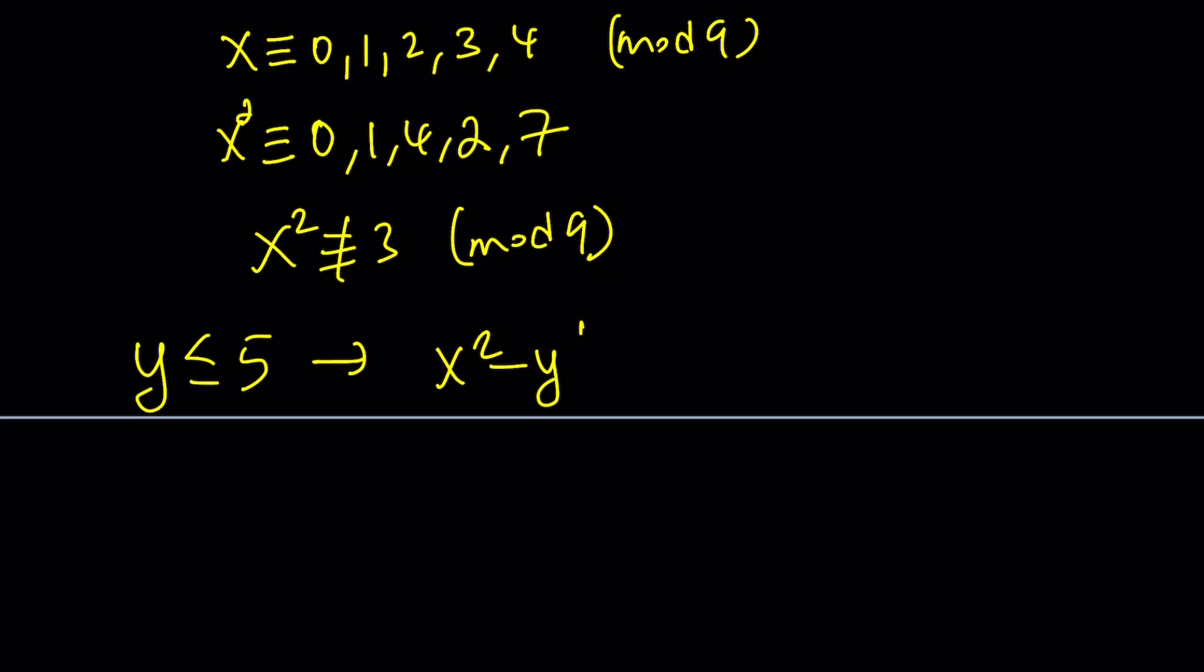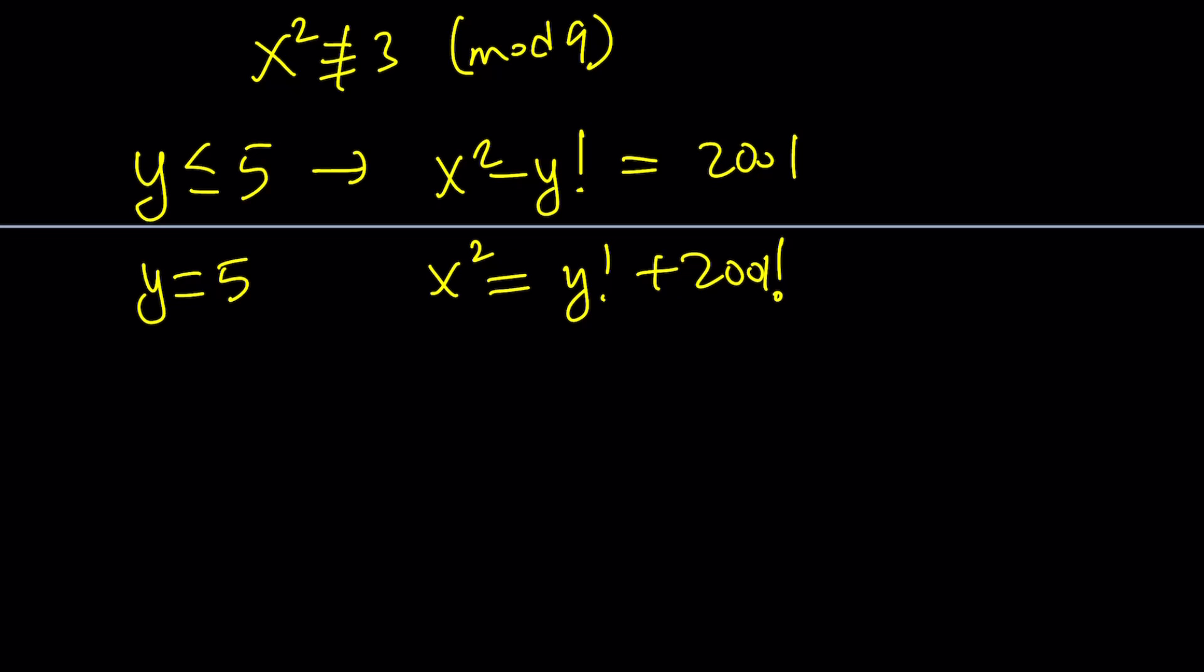Let me copy my equation one more time. If, for example, y equals 5, you are going to get x² = y! + 2001. If y is 5, this is going to be x² = 2001 + 120, and that is going to be 2121. Not good at arithmetic here, but obviously, this is not a perfect square. So y = 5 does not work.